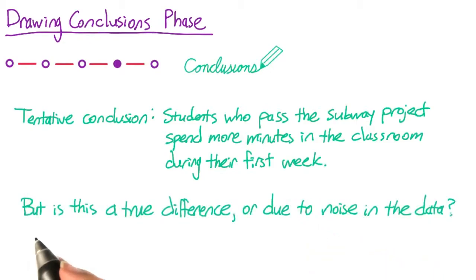However, even if there was no real difference between students who passed their project and students who didn't, you wouldn't expect the two means to be exactly equal. How can you tell if the difference you saw is a true difference or if it's due to noise in the data?